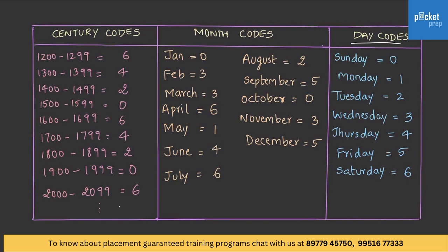There are a few codes to memorize: century codes, month codes, and day codes. For century codes: 1200–1299 is represented with code 6. Taking 1500–1599 as a base starting with 0: 1500–1599 is 0, 1600–1699 is 6, 1700–1799 is 4, 1800–1899 is 2, and so on — this repeats in sequence.